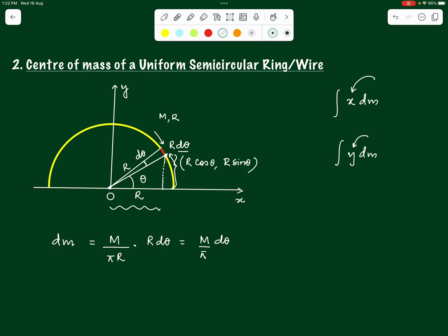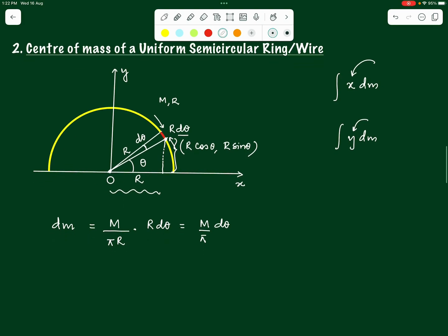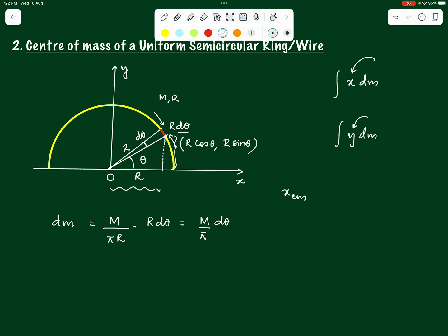We can now use this value of dm to find the x and y coordinates of the center of mass. The x-coordinate of the center of mass is (1/M)·∫x·dm. Substituting: x = r·cosθ and dm = m·dθ/π, we get (1/M)·∫r·cosθ·(m/π)·dθ. We need to set the limits of integration — looking at the figure, theta goes from 0 at the rightmost end to π at the leftmost end of the half ring.